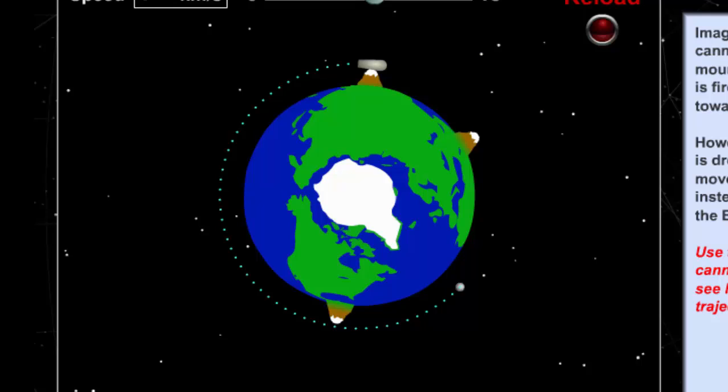So now we understand that objects in orbit are actually falling toward the Earth, but the reason they don't hit the Earth is because of their sideways velocity that is very high, which keeps them in orbit.